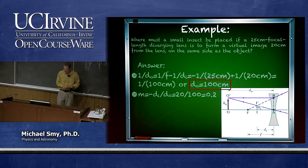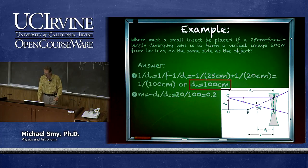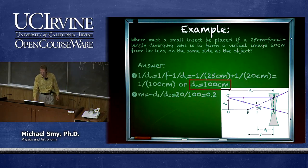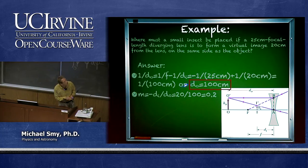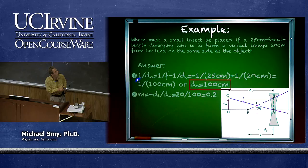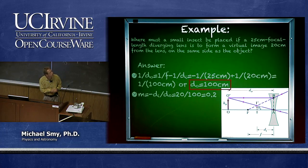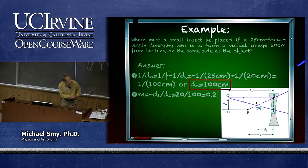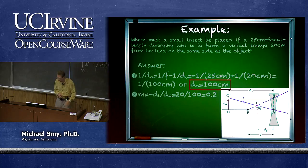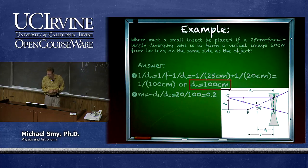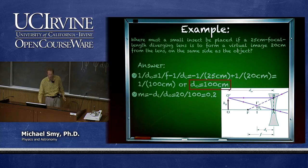For diverging lenses: a small insect is to be imaged virtually 20 cm from a 25 cm focal length diverging lens, on the same side as the object. We use a negative focal length (-25 cm) and solve for the object distance. Because the image distance is negative (same side as object), we get a plus sign in the formula, yielding an object distance of 100 cm. The magnification is 20/100 = 0.2, so the image of the insect is even smaller than the insect itself.